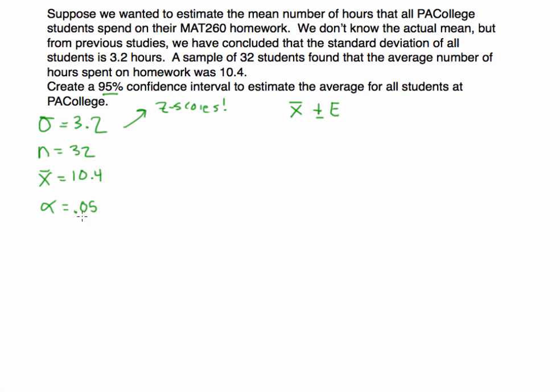That's the area outside of the interval. And if we split that into two, we get 0.025, which means we are looking for the z-score of 0.025, which I hope you should have that memorized by now. A z-score for a 95% confidence interval is 1.96.